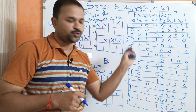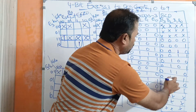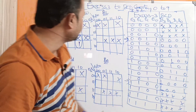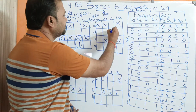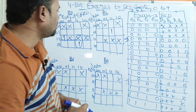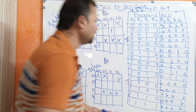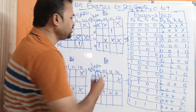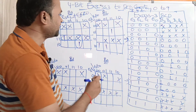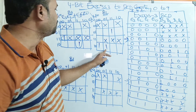Now let us focus on B2. Observing the B2 column, we have 4 ones. The first one is at 0011 (output 1), the second at 1000 (output 1), the third at 1001 (output 1), and the fourth at 1010 (output 1). We need to cover all the ones using the Karnaugh map groups, combining four cells into one group where possible.